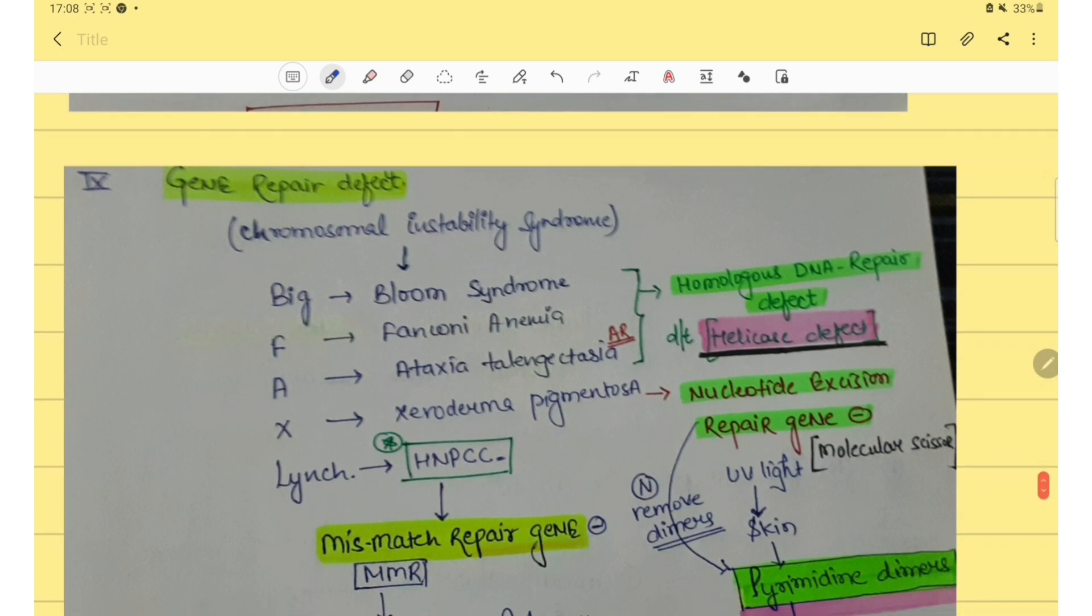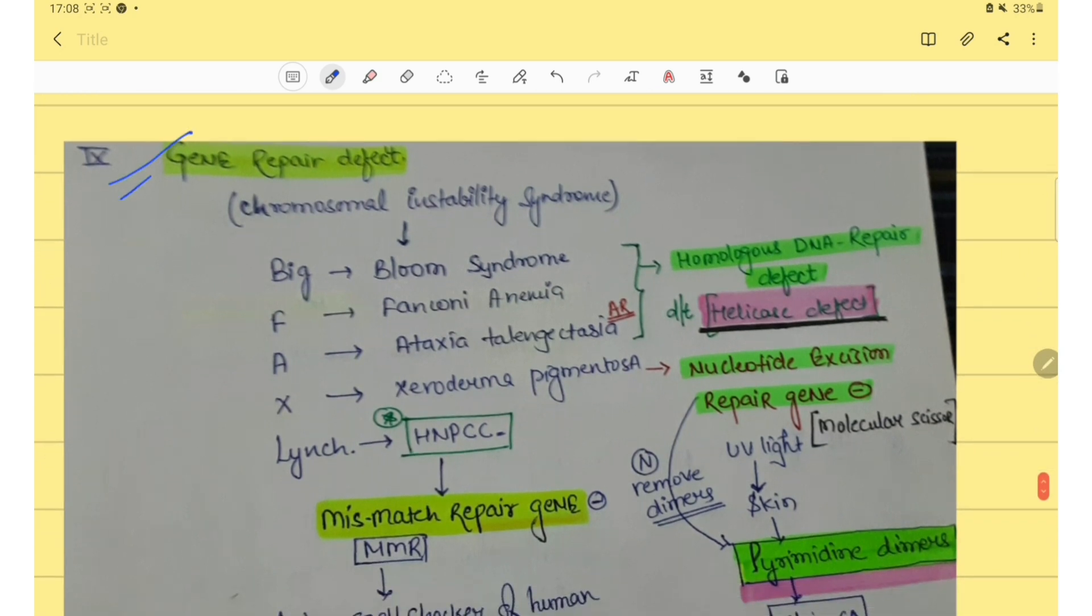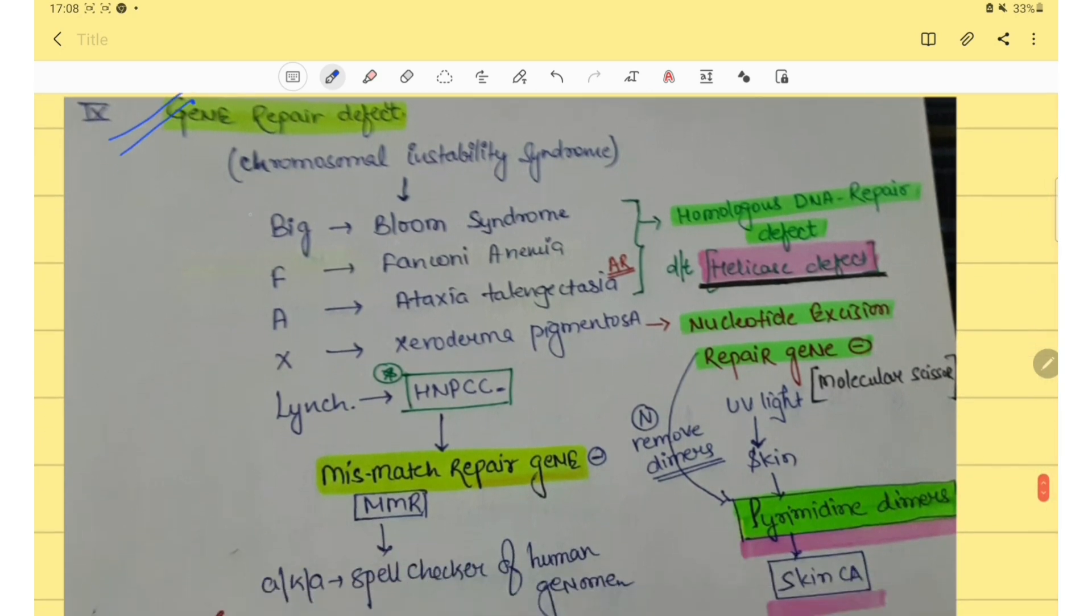Then in last you should know about the gene repair defect examples. We have the mnemonic Big Fax Lynch. Big is Bloom syndrome, F is Fanconi anemia, A is ataxia-telangiectasia, X is xeroderma pigmentosum and HNPCC.